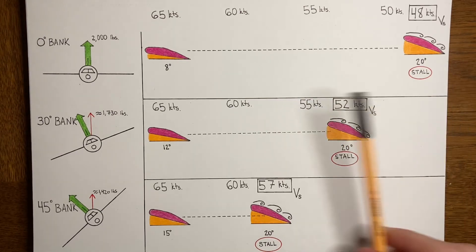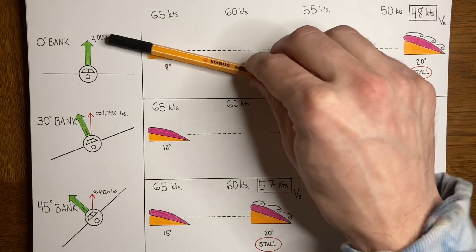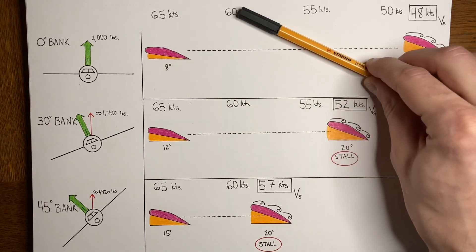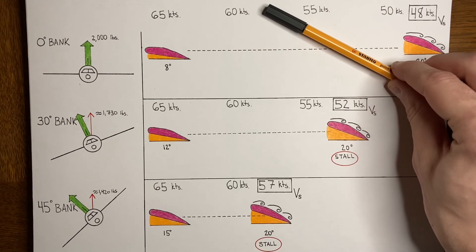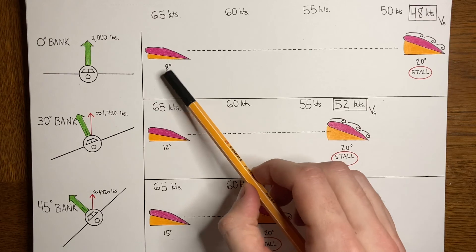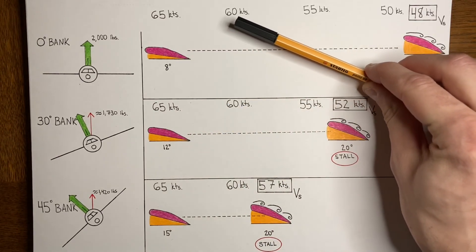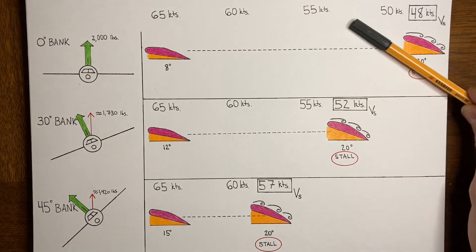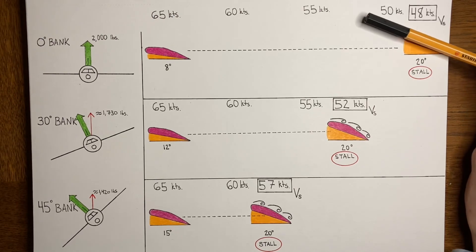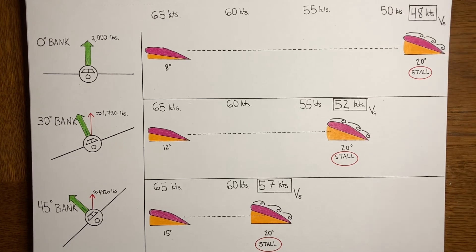The wings-level airplane started at the smallest angle of attack — 8 degrees. As it slows down from 65 to 60 to 55 knots, the angle of attack is increasing, but it has a lot more room to work with because it started much further from the critical angle. So it can slow down a lot more than the banked airplanes. At 50 knots, still going — and in this example, at 48 knots it finally reaches the critical angle and stalls.